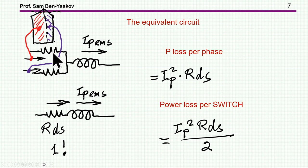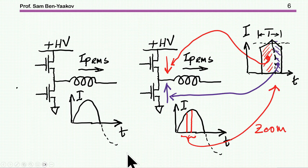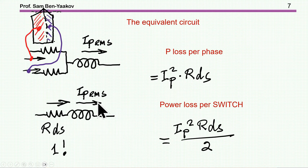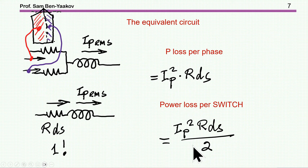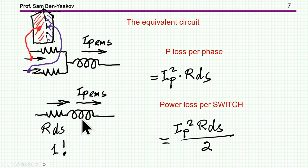Therefore, the total loss of this configuration on average is I²·RDS_on. If you look at either the upper or lower transistor individually, it will be half this value, because on average each transistor conducts half the total time over the full electrical period. Half the time the upper transistor is conducting and half the time the lower transistor is conducting, so the power dissipated is the same for each. You see one RDS_on when looking into the midpoint of the half-bridge.